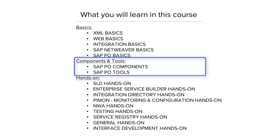Then you will learn everything about the history of SAP PO tool and how it evolved in architecture from its previous versions. You will also learn about the components of SAP PO like AEX, NWBPM, and NWBRM in detail. Then I will introduce you to the tools of SAP PO like SLD, ESR, and NWD. You will also learn about configuration and monitoring of this tool.